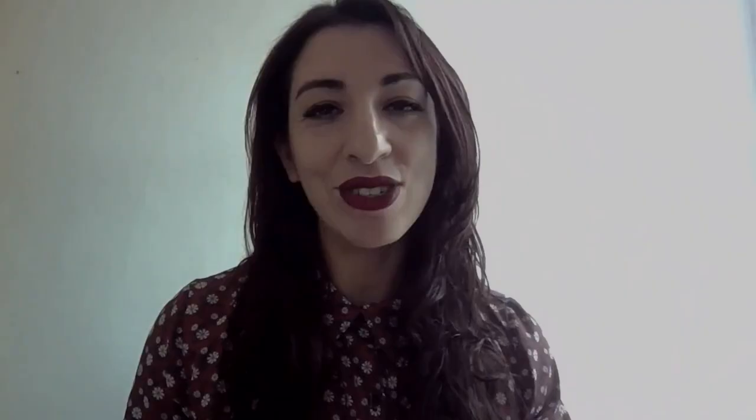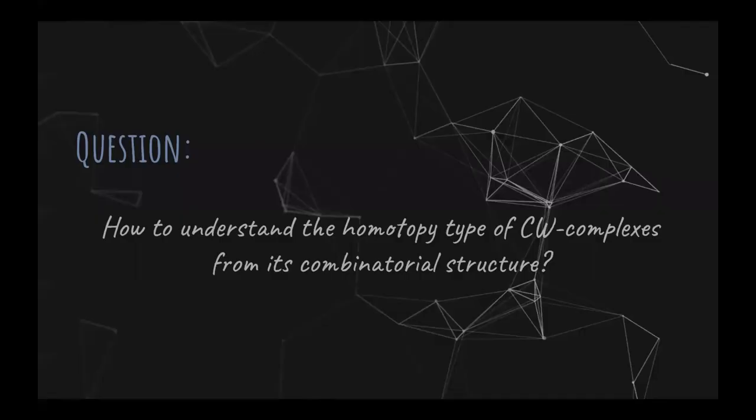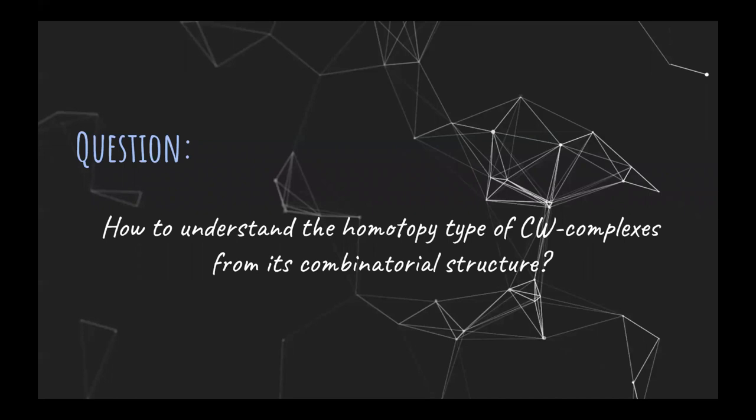In this video, I'm going to present a new version of the Discrete Morse Theory that I call the Discrete Morse Theory 2.0. Let's focus on the following question: Is there any way to completely understand the homotopy type of CW complexes from its combinatorial structure?